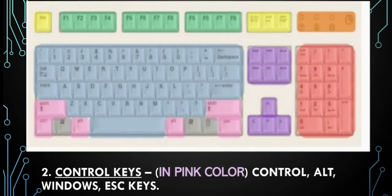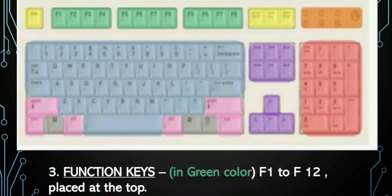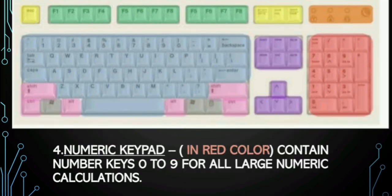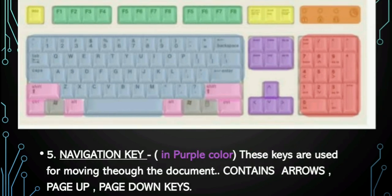Second are control keys, shown in pink — Control, Alt, Windows, and Escape keys are part of it. Third are function keys from F1 to F12, placed at the top of the keyboard, shown in green. Fourth is the numeric keypad, shown in red. It contains all the number keys from 0 to 9 and is required for doing mathematical calculations. Fifth is the navigation key, shown in purple. It contains arrows, page up, and page down keys for moving throughout the document.